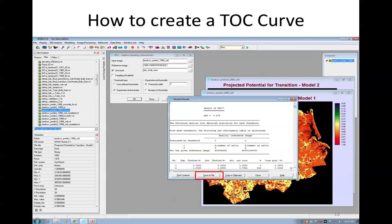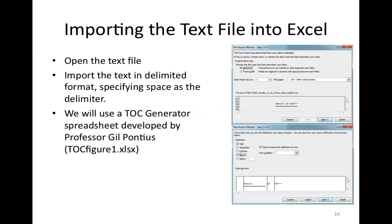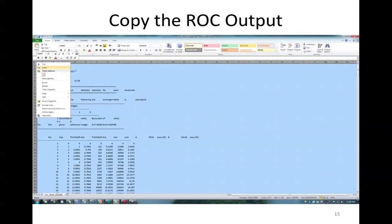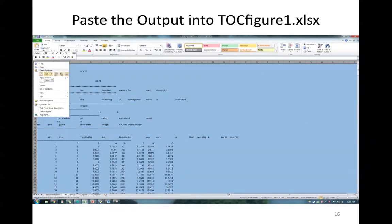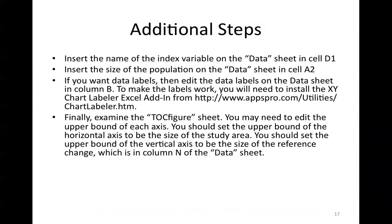We will save the tabular module results to a text file. Open this text file in Excel using delimited formatting, specifying space as the delimiter. We will now use a TOC generator spreadsheet developed by Professor Pontius, entitled TOC Figure 1. Copy the entire spreadsheet that you just imported into Excel, and paste the output into the TOC Figure 1 spreadsheet under the TXT tab, specifying that you want to paste only values. In order to ensure that your TOC figures are as intuitive as possible, insert the variable name into cell D1 on the datasheet. Also, insert the size of the reference change, or category 1 in the boolean map, into cell A2 on the datasheet.